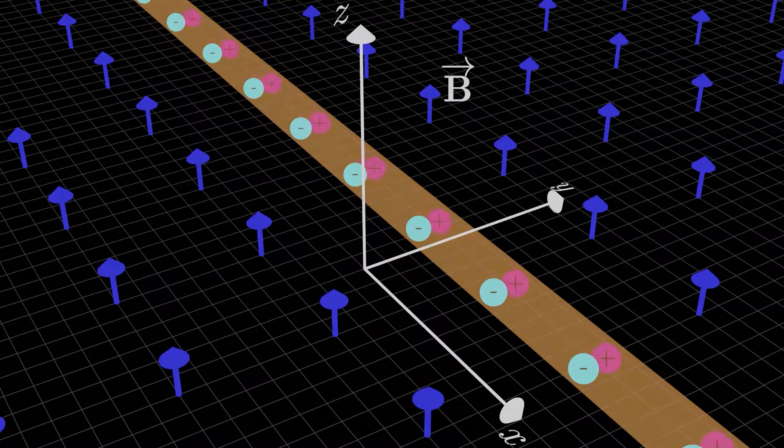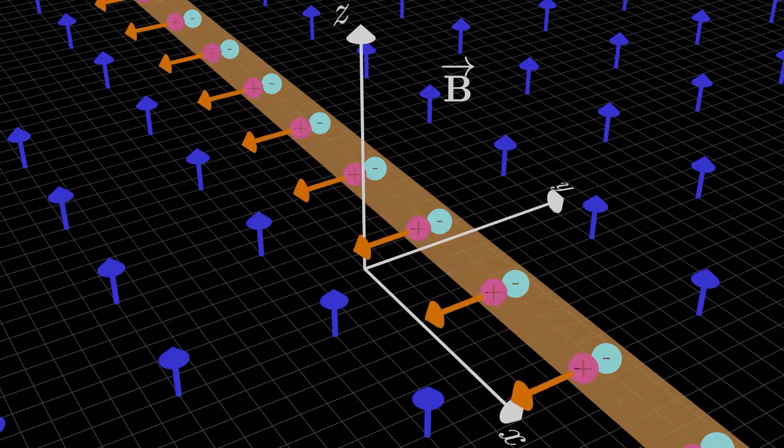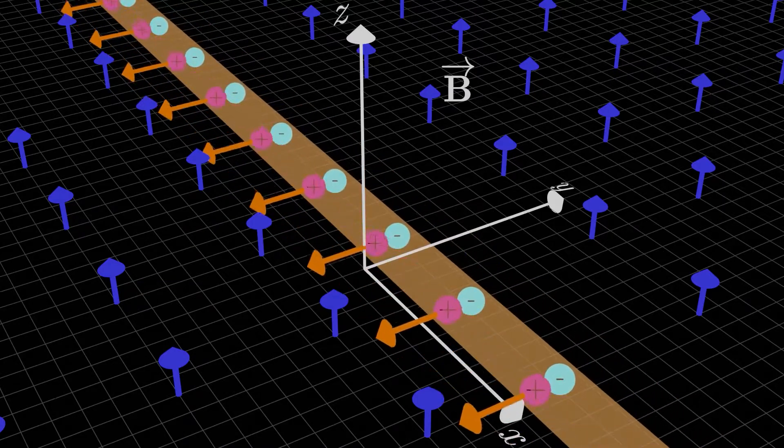The Hall effect is another neat phenomenon that can occur due to a magnetic field. We already saw that a magnetic field can generate a magnetic force on a current-carrying wire that can literally pull the wire in a certain direction.